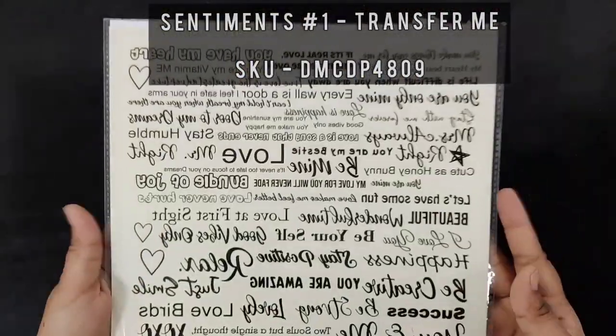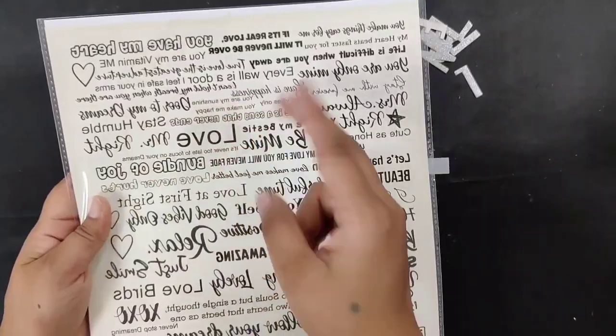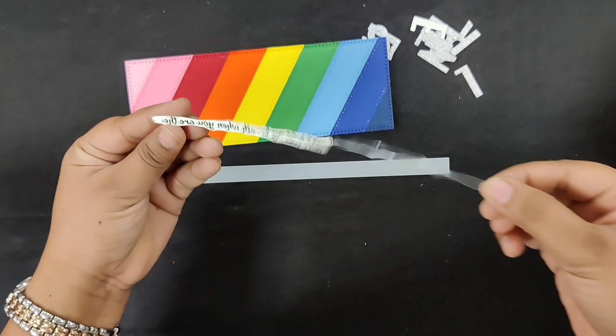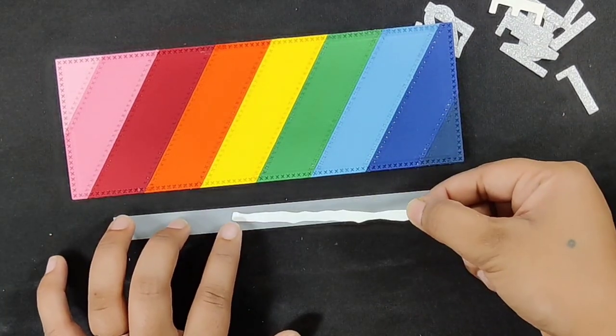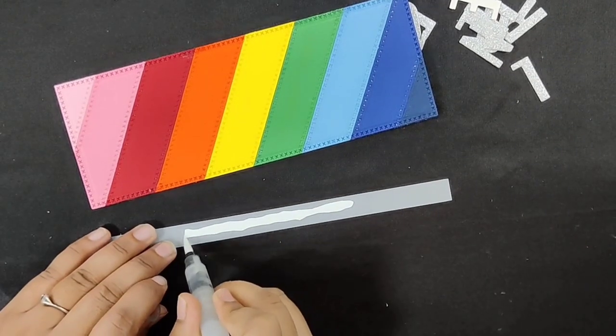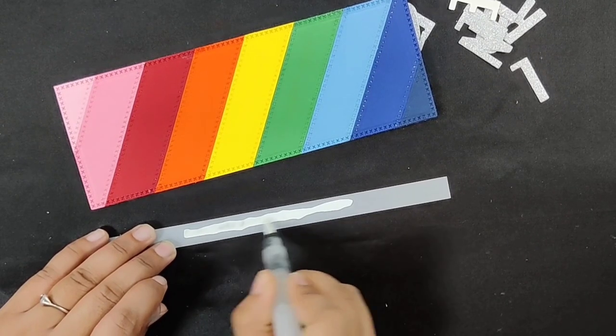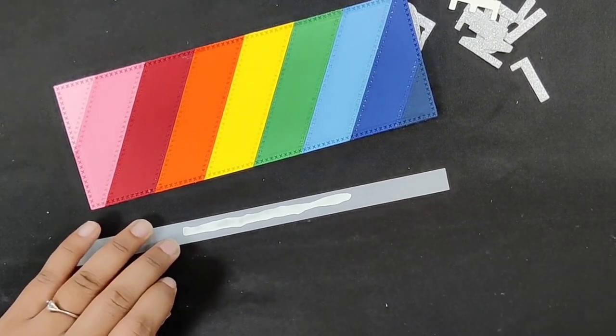Take sentiment number one transfer sheet. Fussy cut any sentiment of your liking from the sheet and transfer it onto the vellum. To transfer, first peel off the protective film from the top, stick it upside down on the vellum sheet, and apply water using a water brush pen. Once the transfer becomes clear, slide down the backing and your transfer is done.